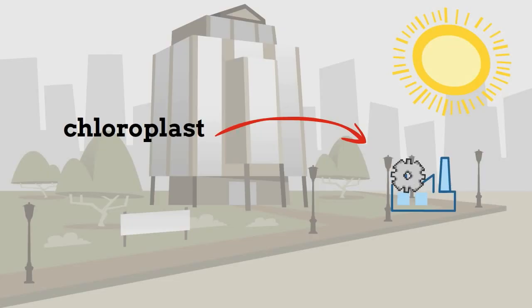And finally, the chloroplasts are represented by small solar factories that convert sunlight to energy.